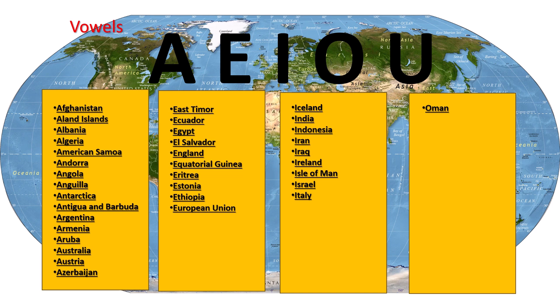First of all, let's start with the vowels: A, E, I, O, U. Afghanistan, Åland Islands, Albania, Algeria, America, Samoa, Andorra, Angola, Antarctica, Antigua and Barbuda, Argentina, Armenia, Aruba, Australia, Austria, and Azerbaijan.